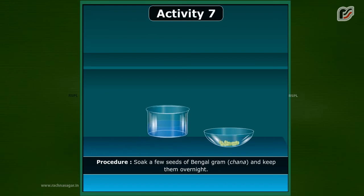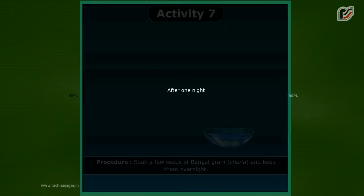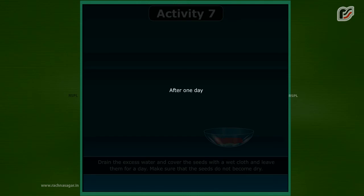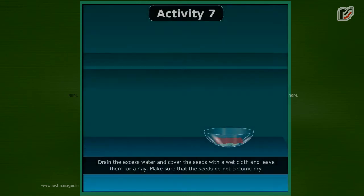Procedure: Soak a few seeds of Bengal gram (chana) and keep them overnight. Drain the excess water and cover the seeds with a wet cloth and leave them for a day. Make sure that the seeds do not become dry.